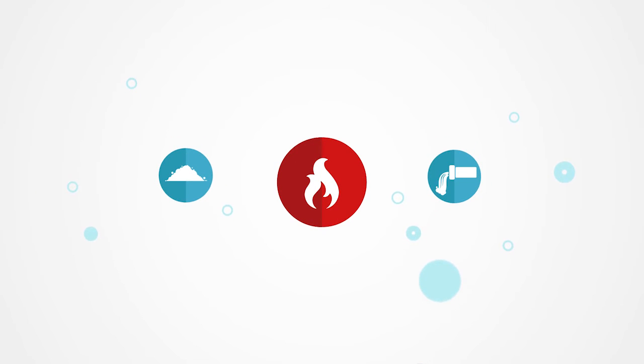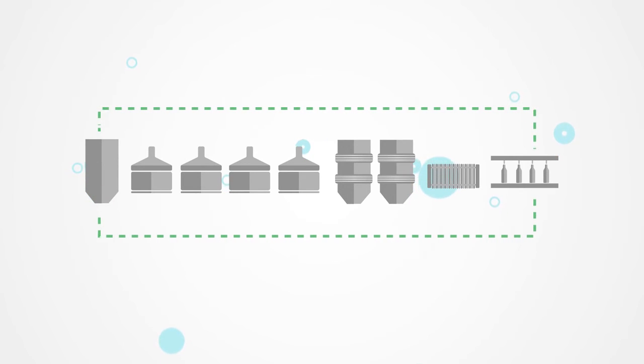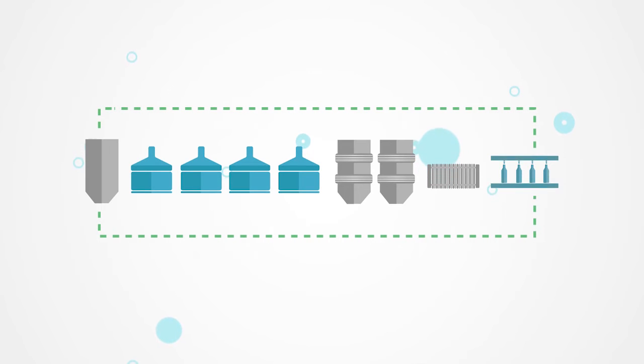From brewer's grains and sewage water, we gain biogas for heating and electricity. This is how we combine the two formerly independent departments of production and bottling.